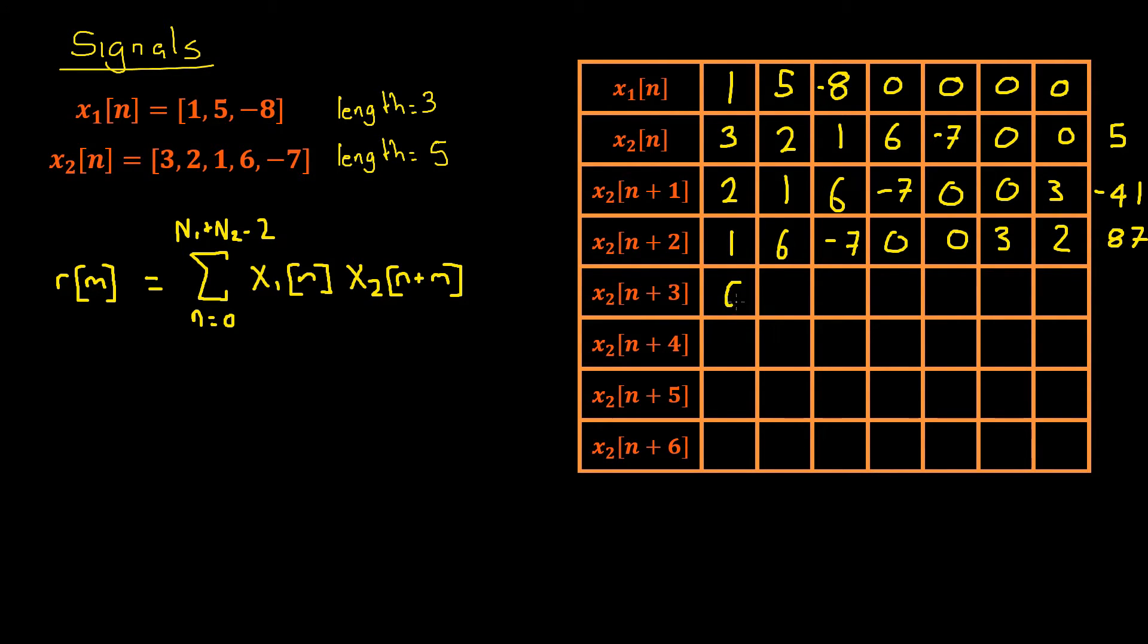Let's shift again, which will give us 6, -7, 0, 0, 3, 2, 1. Repeating the process again, we have 6 times 1 is 6, plus 5 times -7, which is -35. The 8 and 0 would cancel, the 0 and 0 is 0, 0 and 3 is 0, 0 and 2 is 0, 0 and 1 are 0, which simply leaves us with -35 plus 6, which would be -29.